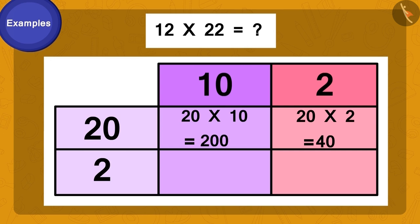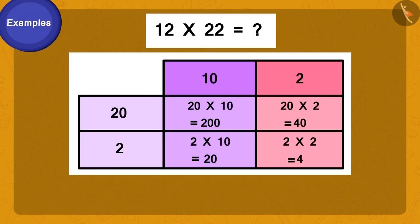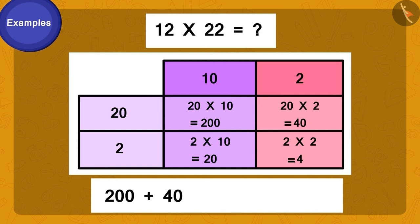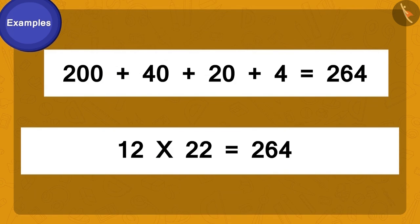Now we multiply 2 of 22 by 2 of 12. That's 2 times 2, which is 4. Finally, multiply 2 of 22 by 10 of 12. What would we get? 20. Now it's very easy. Adding 240, 20, and 4, our answer is 264. Following this method, we got 12 times 22 is 264. Got it?